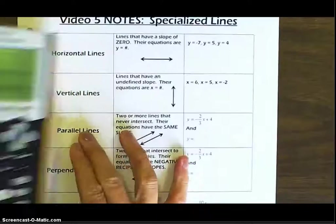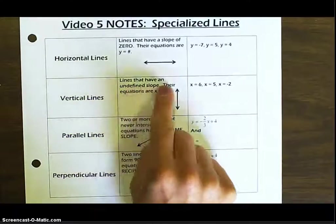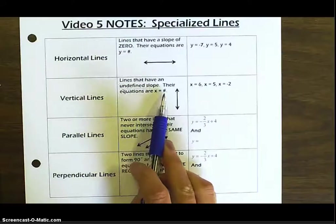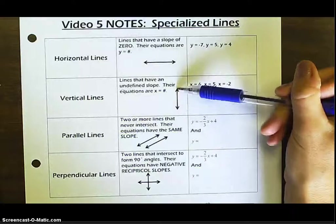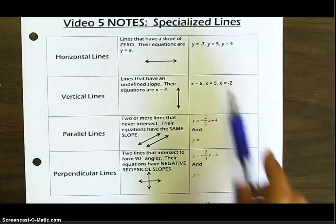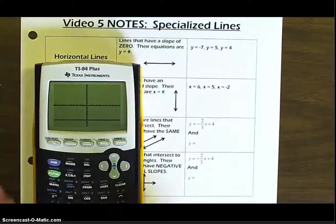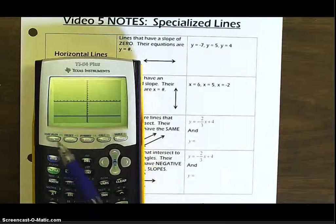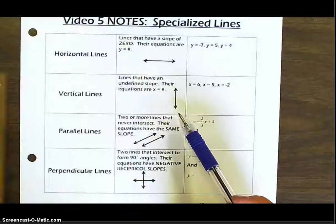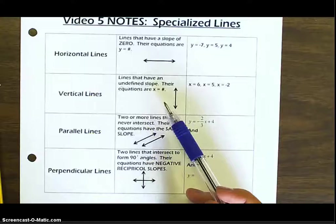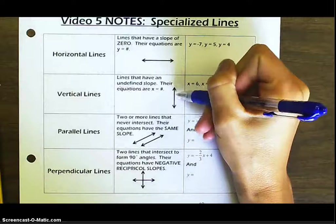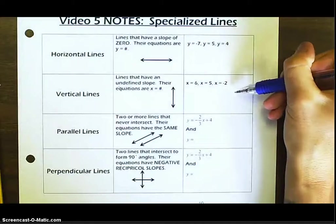Now, vertical lines are lines that have an undefined slope. Their equations are x equals a number — x equals six, x equals five, x equals negative two. If we wanted to verify this in the graphing calculator, there is no x equals option. The calculator cannot graph x equals a number because a vertical line is not a function. It fails the vertical line test because if you draw a vertical line through a vertical line, it touches at every single point. So these are lines the calculator cannot do.